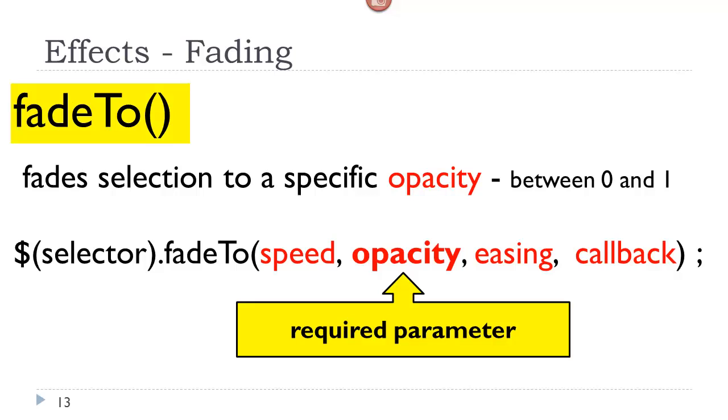We also have a fade to effect, which is a little bit different. The fade to effect takes four possible parameters. One is required, and they go in this order. The speed, the opacity, the easing, and the callback function. The only required parameter is opacity.